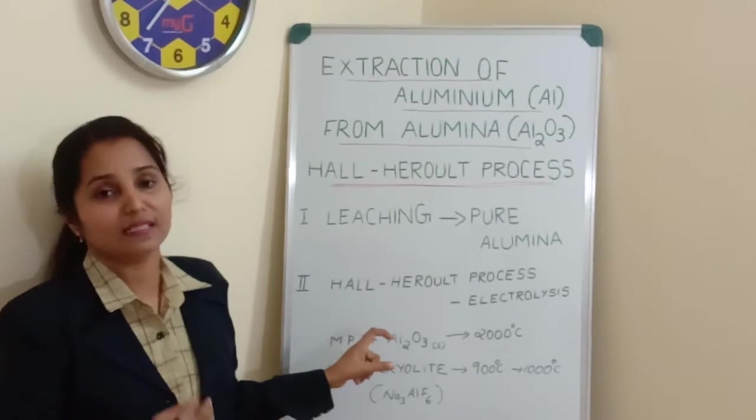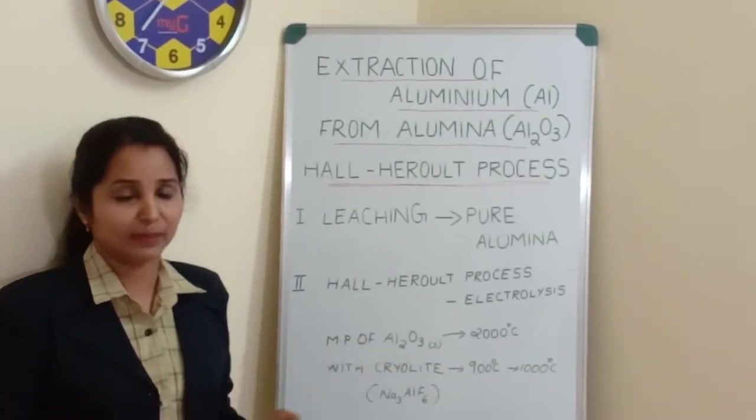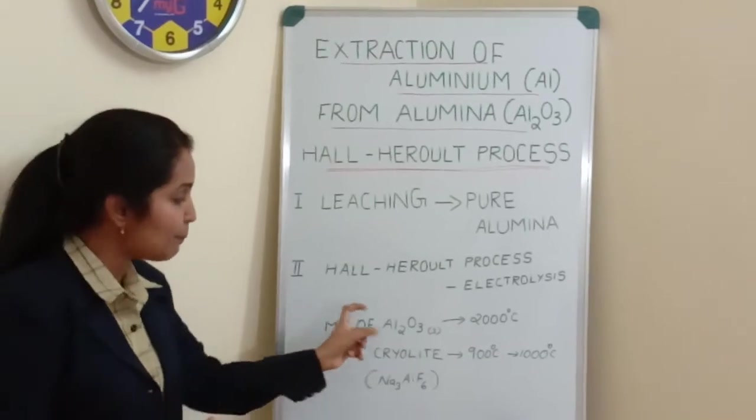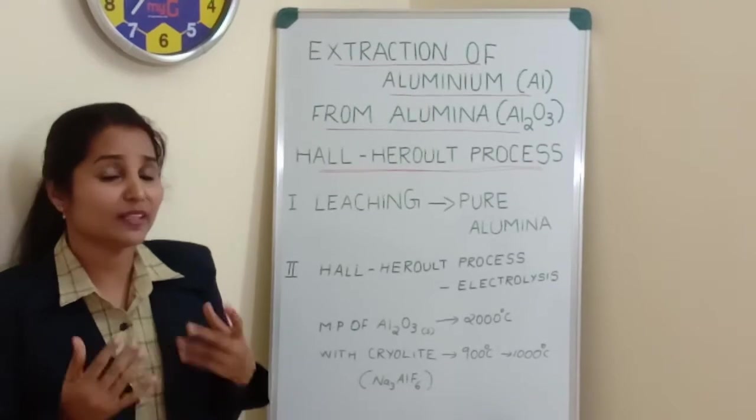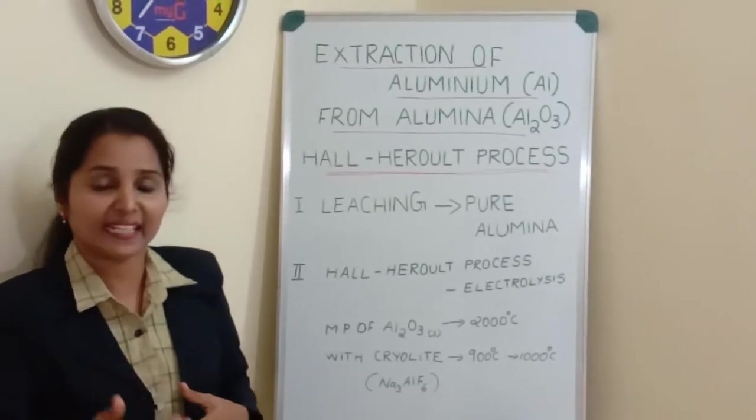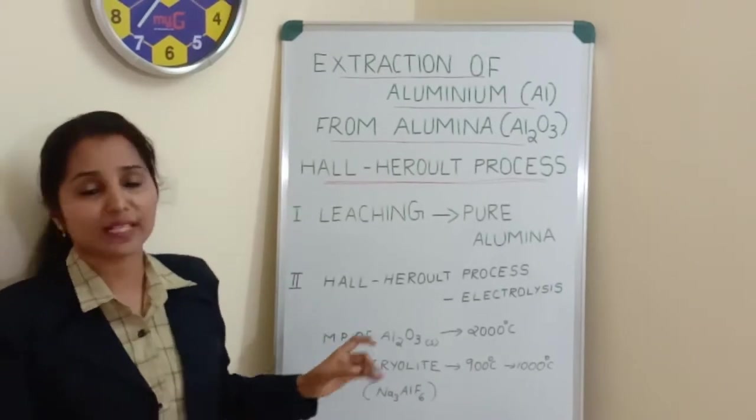Because the chemical bonds in solid alumina are more covalent in character. That means the electrons in this compound are shared to form chemical bonds. So there are no free electrons available for carrying electric current. So solid alumina is a poor conductor of electricity.